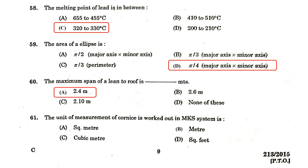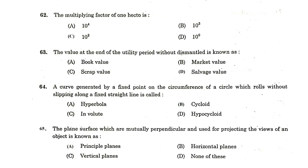The unit of measurement of cornice in the MK system is meters. The multiplying factor of 1 hectare is 10⁴ square meters. The value at the end of the utility period without dismantling is known as salvage value. The curve generated by a fixed point on the circumference of a circle which rolls without slipping along a fixed straight line is called a cycloid.